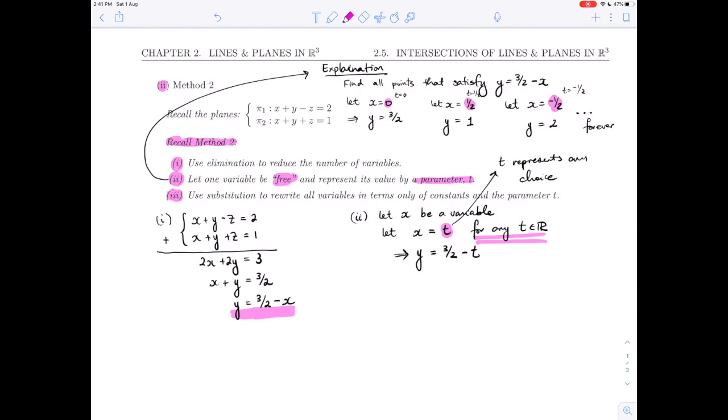That's only two of our variables. We got rid of z. Let's go into the third step here, which is to use substitution to rewrite all variables in terms of the constants and the parameter t. Let's go back into one of the plane equations. It doesn't matter which one. I'm going to choose π₁'s equation. If I solve for z, z is going to be x + y - 2. Now I'm going to substitute in what we have. I know that x is t and y is 3/2 - t and then we have minus 2. I can simplify; those t's cancel out and I end up with z is -1/2.